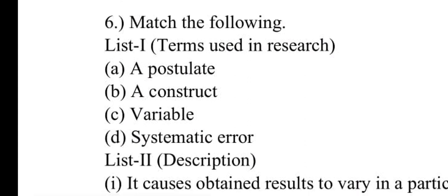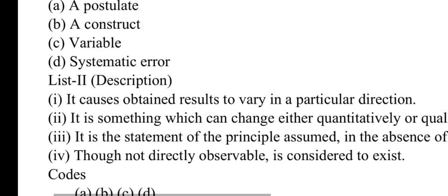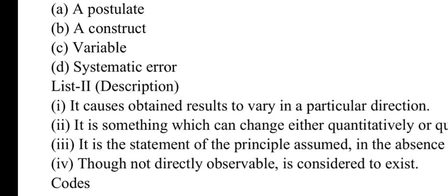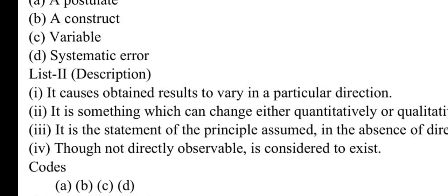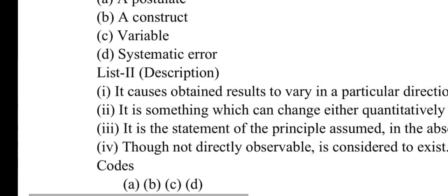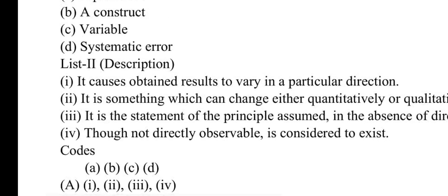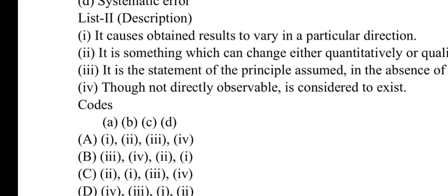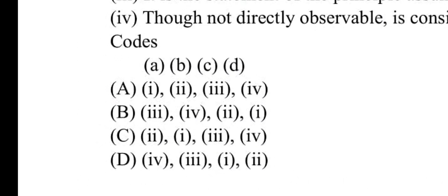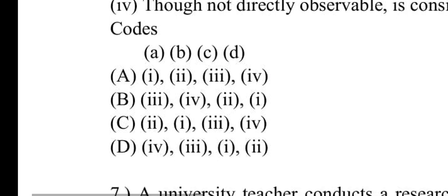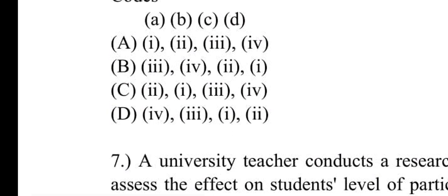Number six: Match the following. In List 1, terms used in research: A: a postulate, B: a construct, C: variable, D: systematic error. In List 2, descriptions: it causes obtained result to vary in particular direction, it is something which can change either quantitatively or qualitatively, it is the statement of principle assumed in absence of direct evidence, it is not directly observable but is considered to exist. Number B will be correct: A-3, B-4, C-2, D-1.